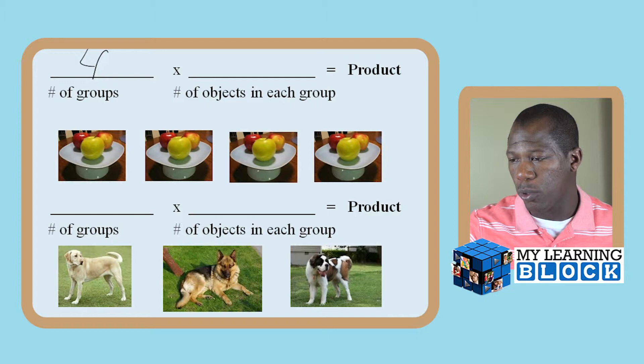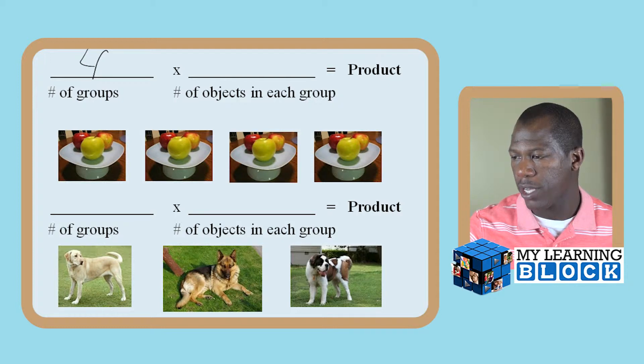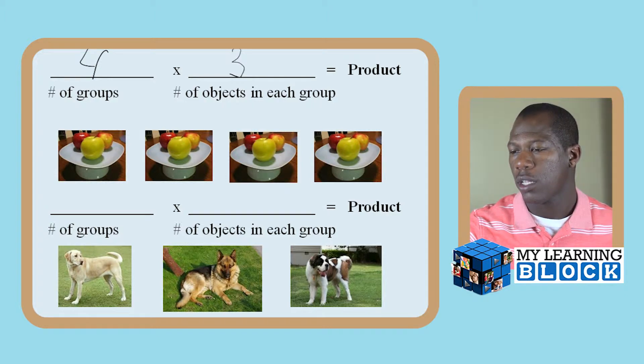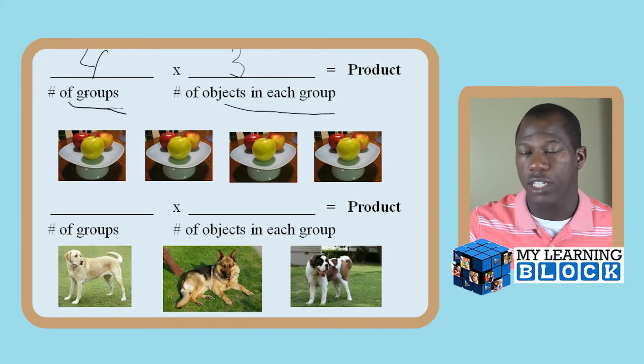To continue with the apples, we have one, two, three in this one. One, two, three. One, two, three. One, two, three. So we have four groups and we have three apples in each group.